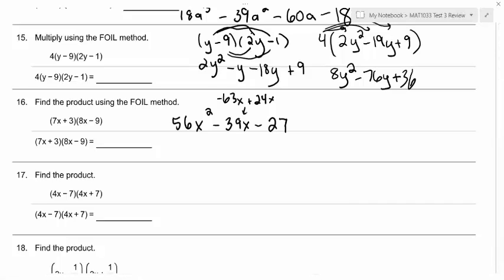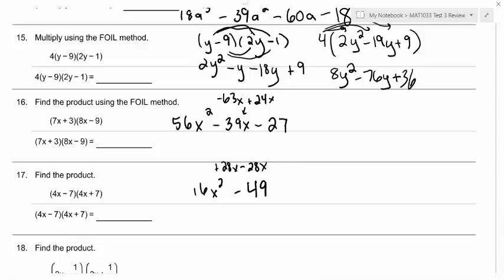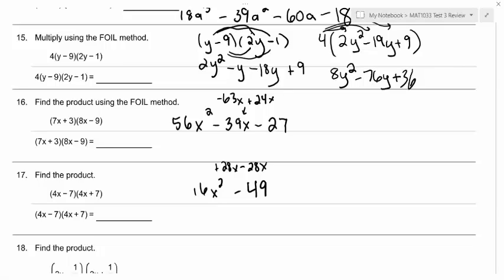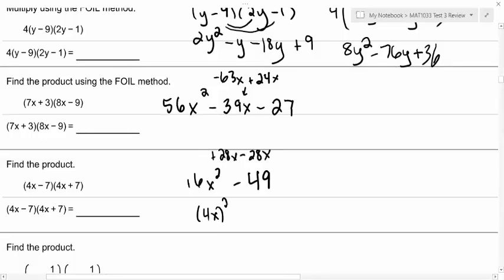Caitlin, what did you get for 17? 16x squared minus 49. Good. You got that because your middle terms were plus 28x and minus 28x, which completely canceled out, which is why you do not have an x term in your answer. And you could have actually known that was going to happen because this is an example of the difference of squares. Anytime you have a sum or difference of the same two terms being multiplied together, the middle terms cancel out. So you can use FOIL or use the special rule: 4x squared minus 7 squared. Either way works.